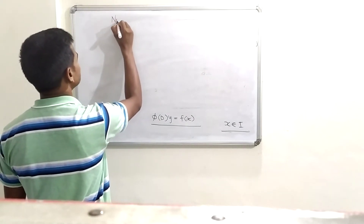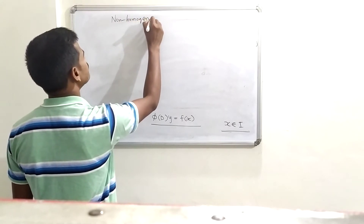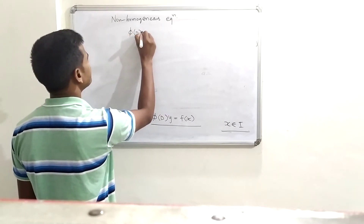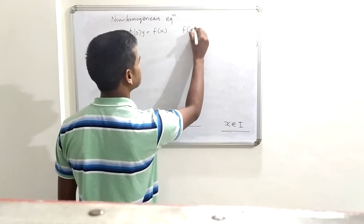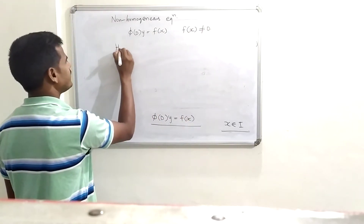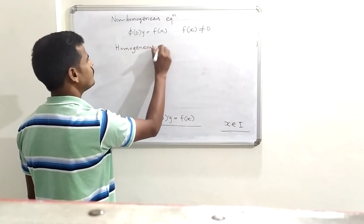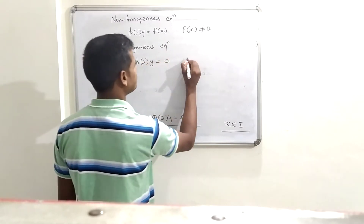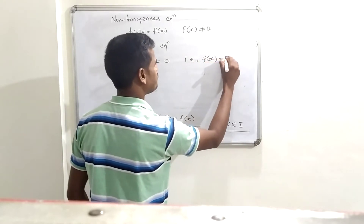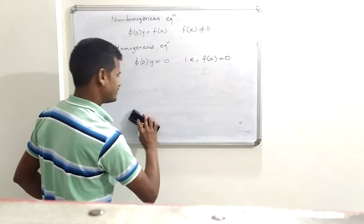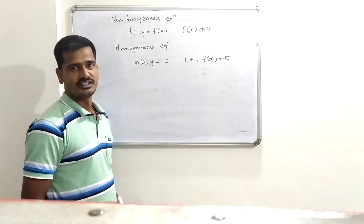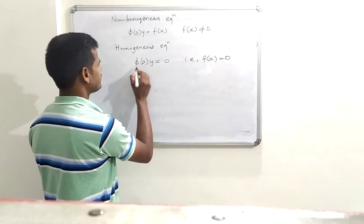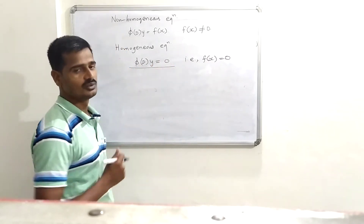Now I define non-homogeneous and homogeneous equations. The non-homogeneous equation is φ(D)·y = f(x) where f(x) is non-zero. The homogeneous equation is simply φ(D)·y = 0, that is f(x) = 0. The solution of the non-homogeneous differential equation consists of two parts: one is the complementary function and the second is the particular integral. The complementary function is the solution associated with the homogeneous equation φ(D)·y = 0.